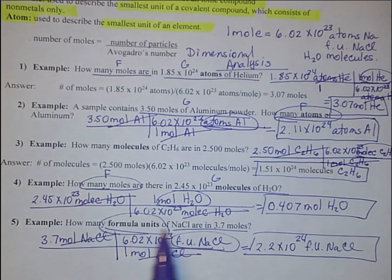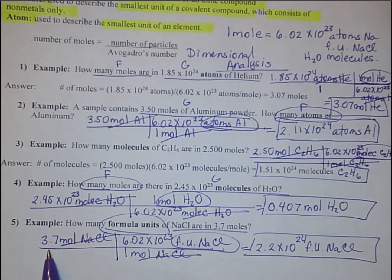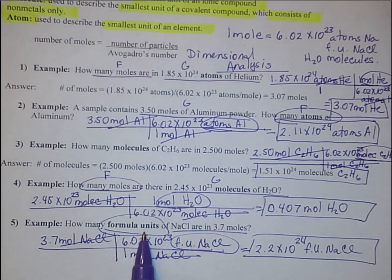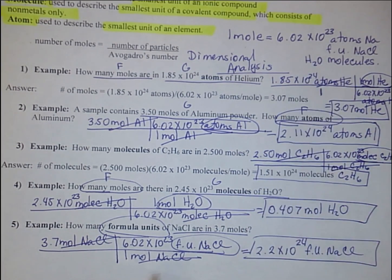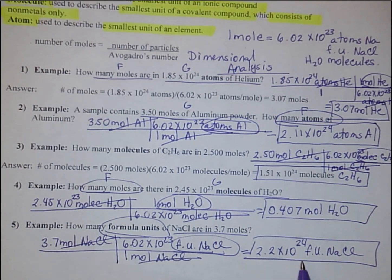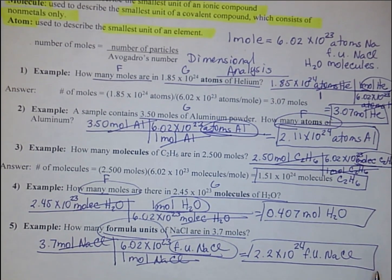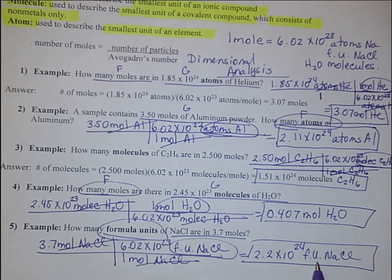Number 5: how many formula units are in 3.7 moles of sodium chloride? Start with 3.7 moles of sodium chloride and multiply by 6.02 × 10²³ formula units. You were only given two significant figures, so your final answer will also have two significant figures. Your answer should include a number, a unit, and the compound for a complete answer. So: 2.2 × 10²⁴ formula units of sodium chloride.